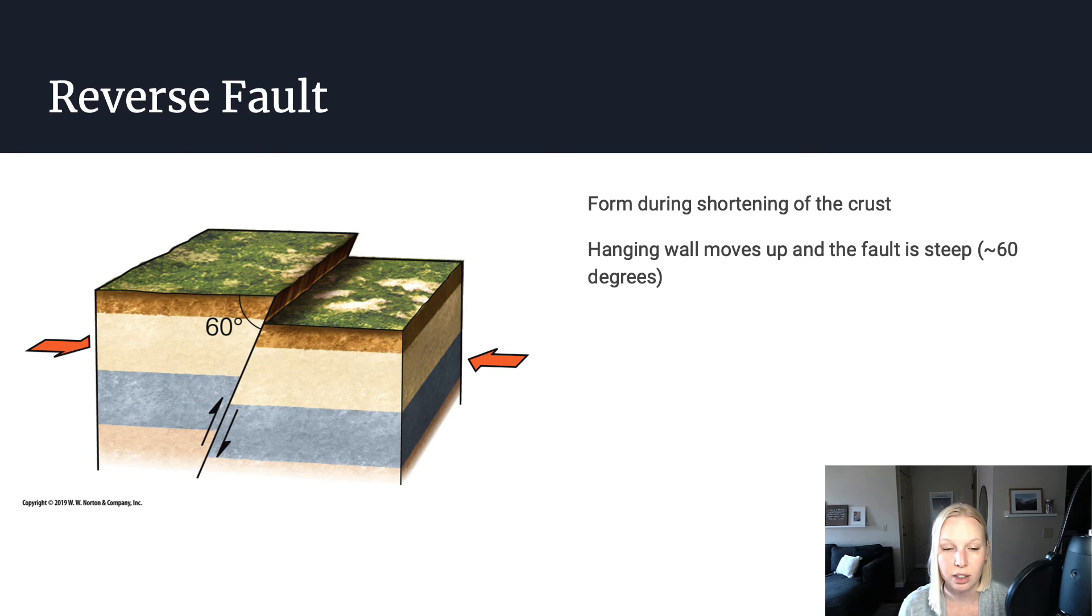A reverse fault, on the other hand, forms during shortening of the crust. So if you have convergence or compression in the crust, you're probably going to form some reverse faults. Reverse faults form at pretty steep angles at about 60 degrees. And generally what's happening here is the hanging wall is moving up relative to the foot wall, or the foot wall is moving relatively down to the hanging wall. You can say that either way.